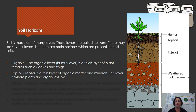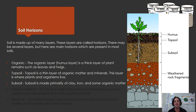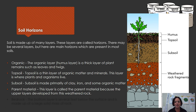The topsoil is a thin layer of organic material, matter, and minerals, and that's where most of the plants and organisms live. Under that is the subsoil — because 'sub' means under. The subsoil is made primarily of clay, iron, and some other organic materials, and usually only the more established, bigger plants can penetrate their roots down into it.